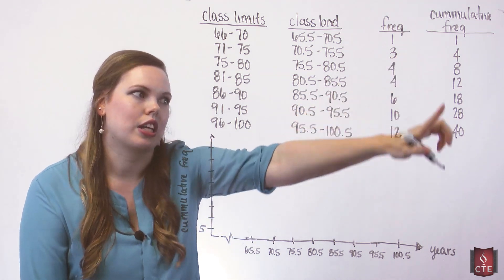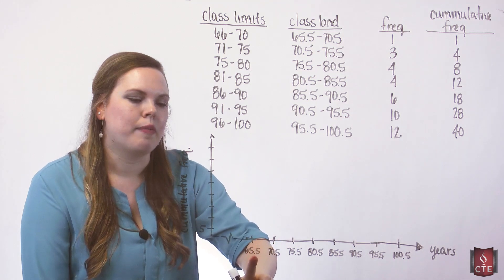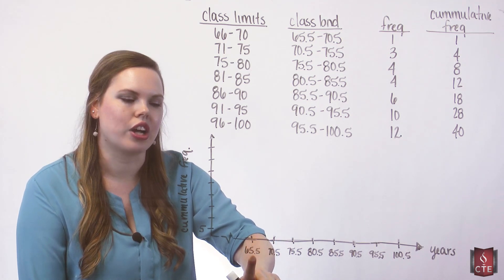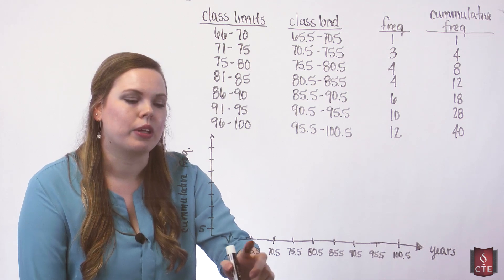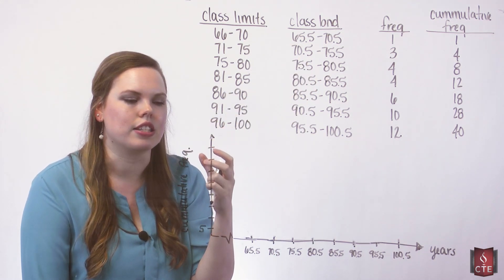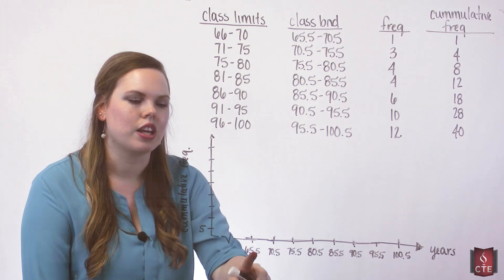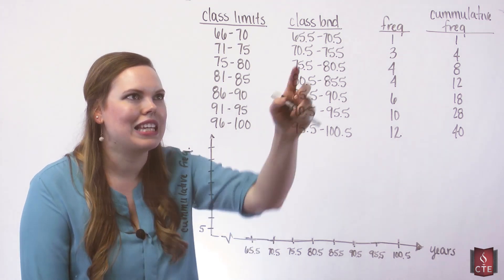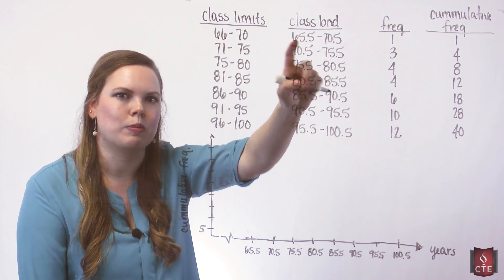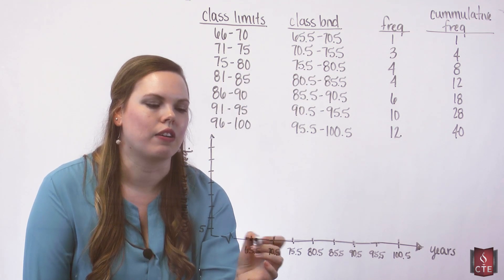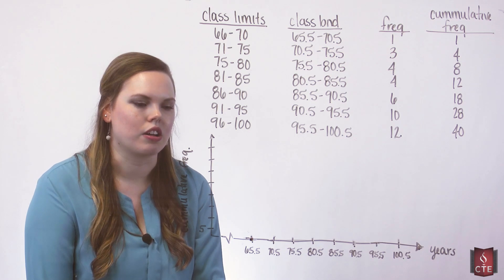We'll start and we're just going to look at our cumulative frequency. It's a little strange in that you're always going to start your ogive at zero with your lowest class boundary. The way you want to think of this is this is the number of data values that are less than this value. In this case, we don't have any values below 65.5, so we have zero here as our first point on our ogive.